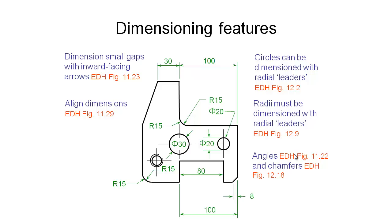For angles and chamfers, there are specific ways to dimension them according to the standards. To dimension an angle where we don't have a face to refer to, we have a projection line standing off from the object, and for a small angle the arrows go on the outside with a small arc — the dimension is typically in degrees standing off to the side. For a chamfer — an angled cut — if it's a 45-degree chamfer, we note the dimensional distance, say 8, and then the angle, 45 degrees.